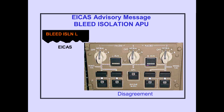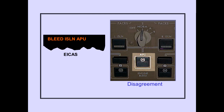The ICAS advisory message 'bleed isolation' is displayed when there is a disagreement between the isolation valve switch and valve position; the respective valve light also illuminates. The ICAS advisory message 'bleed isolation APU' is displayed when there is a disagreement between the isolation switch and commanded valve position; the valve light also illuminates.